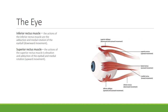There are a number of muscles associated with the eye. The two to know are the inferior rectus muscle and the superior rectus muscle. The actions of the inferior rectus muscle are adduction and medial rotation of the eyeball, allowing for downward movement. The actions of the superior rectus muscle are elevation, adduction, and medial rotation of the eyeball, allowing for upward movement.